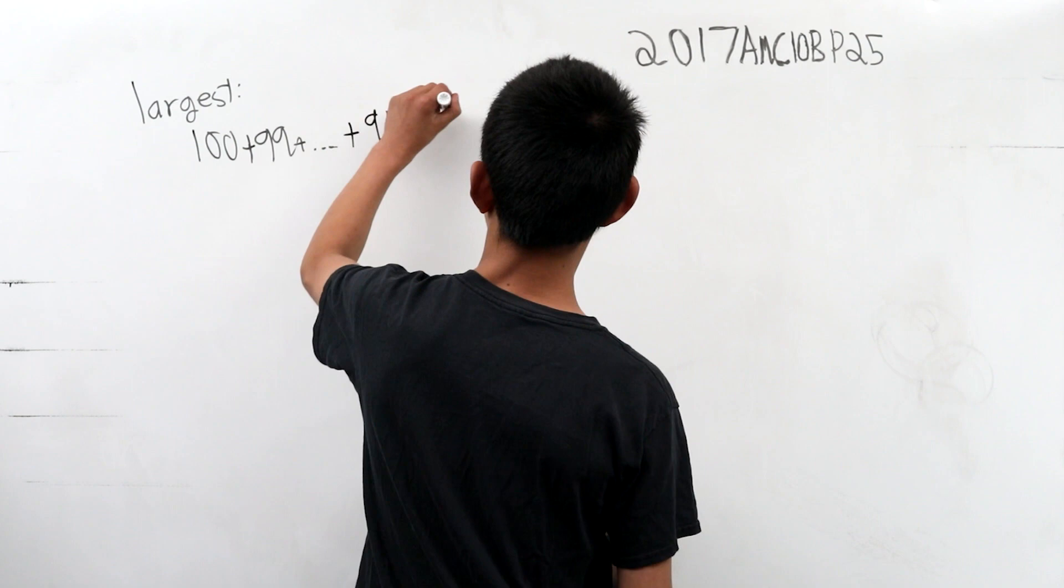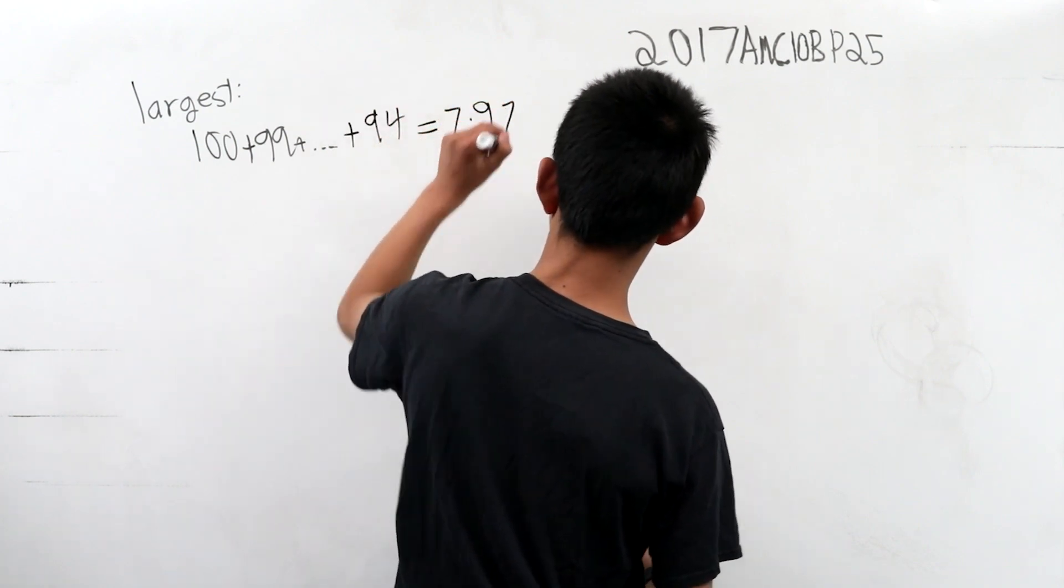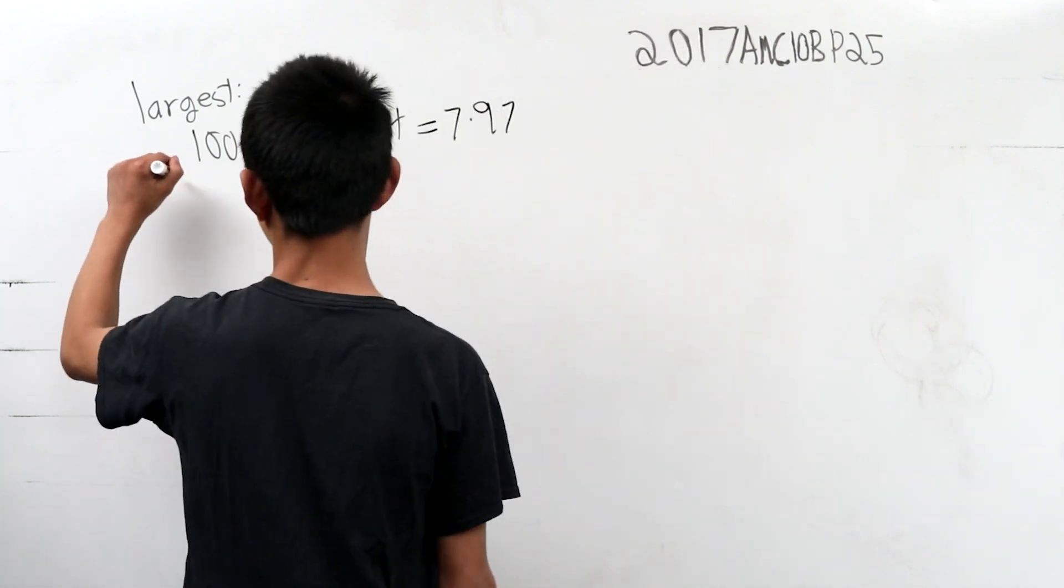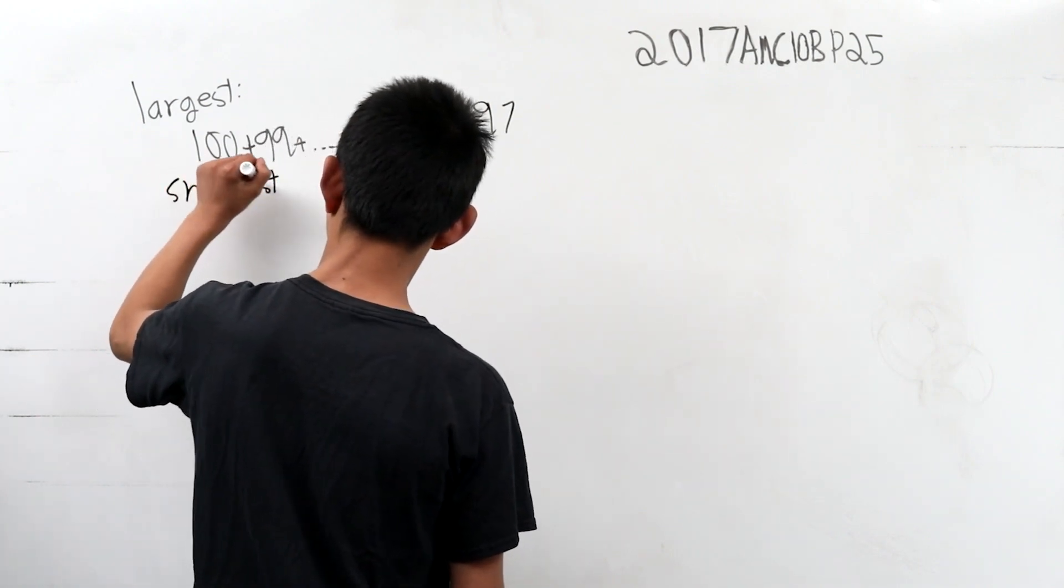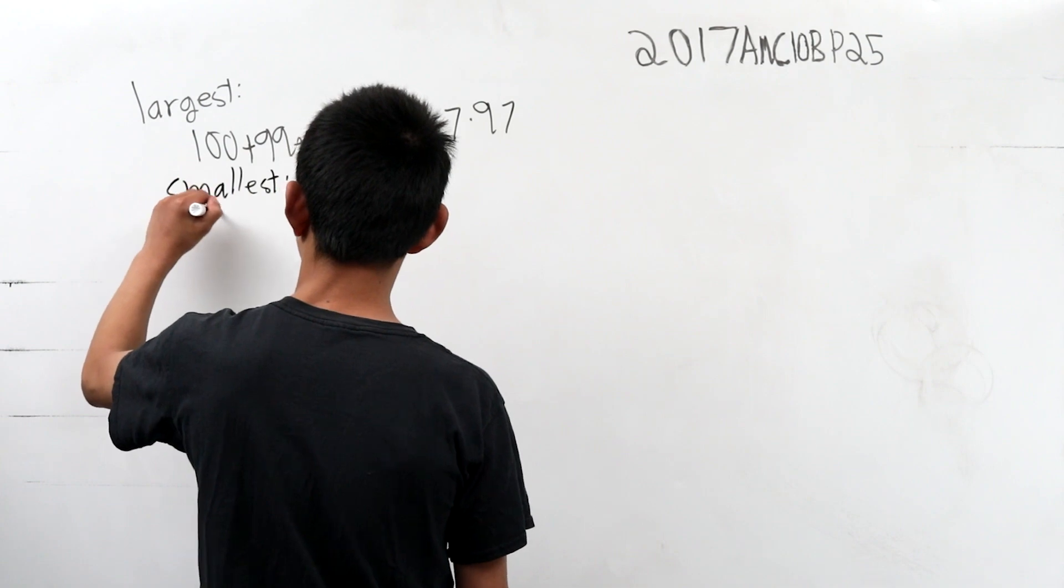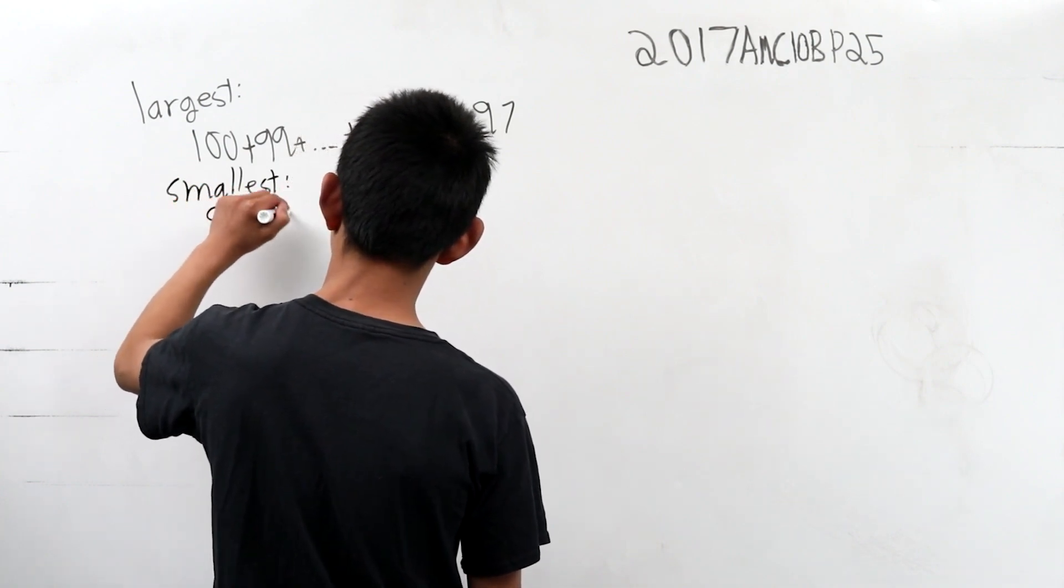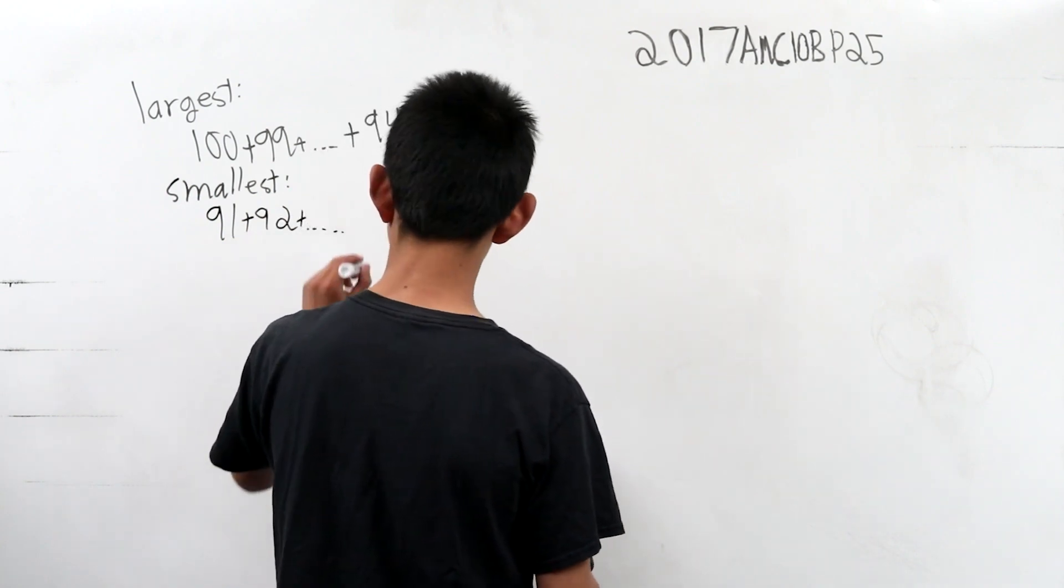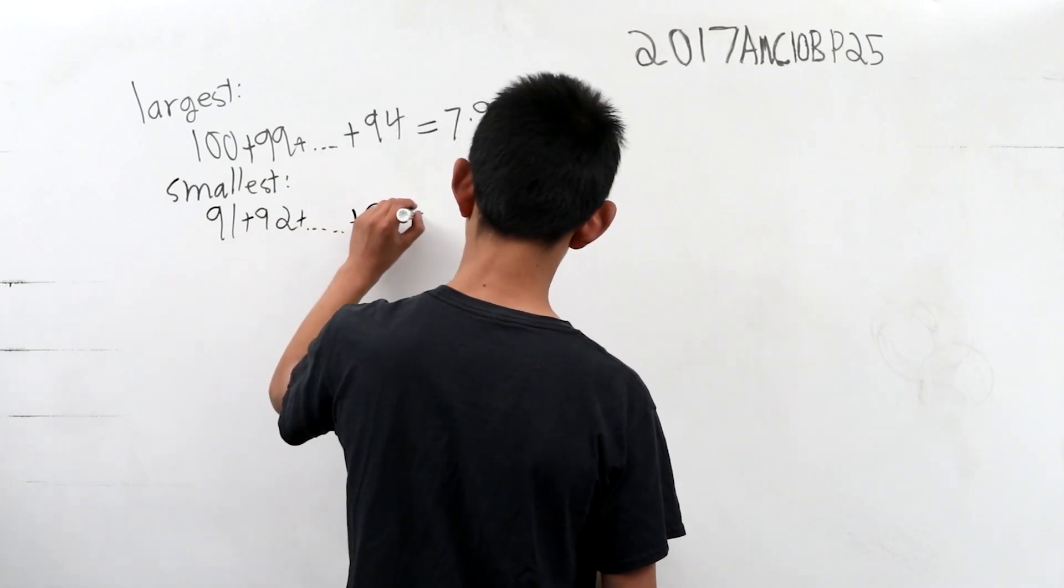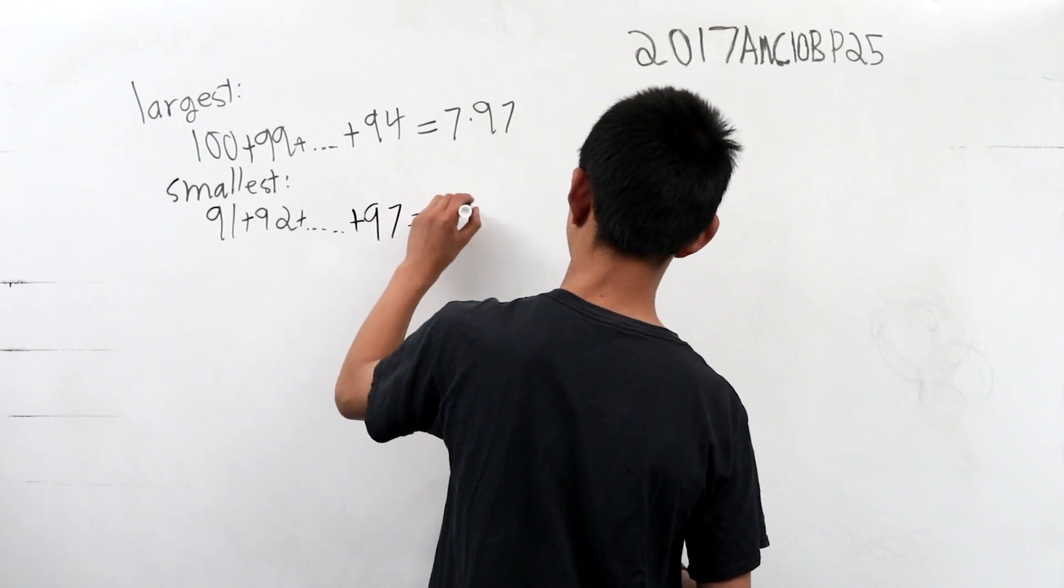And similarly, we can find the smallest. And this is 91 plus 92 plus dot, dot, dot, and then plus 97 is equal to seven times 94.